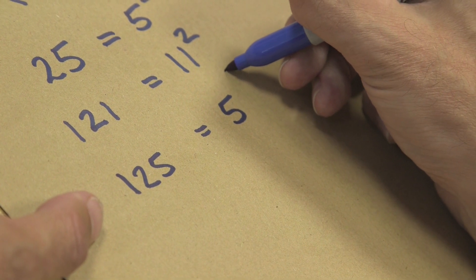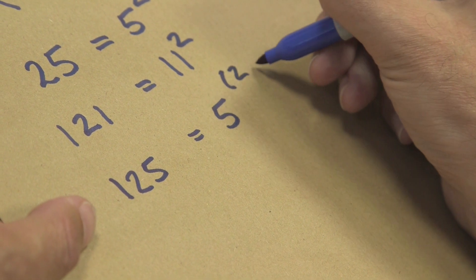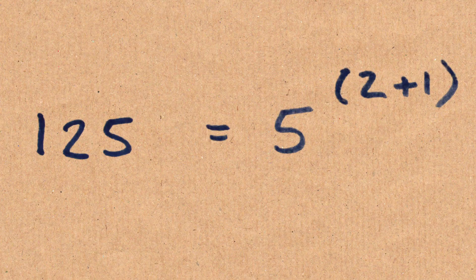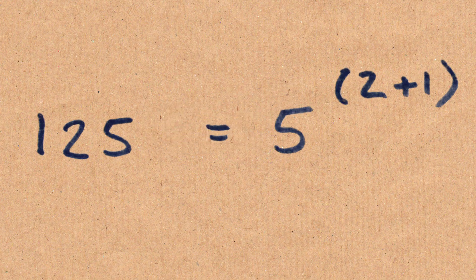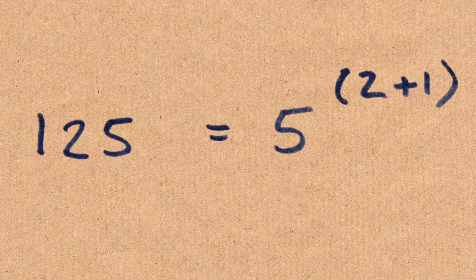So 125 is 5 to the power of 2 plus 1. So I'm just using the brackets there to add the 2 and the 1 and make up 3, so 5 cubed is 125.